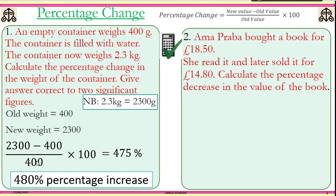Let's look at question two. Amma Praba bought a book for £18.50. She read it and later sold it for £14.80. Calculate the percentage decrease in the value of the book. Now here the confirmation is made that it's a decrease. Sometimes they might just say calculate the percentage change in the value of the book, so the answer will confirm that it is a decrease.